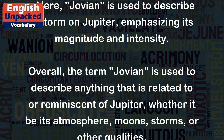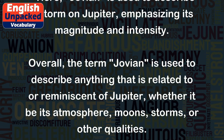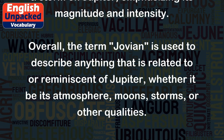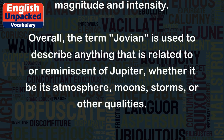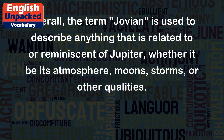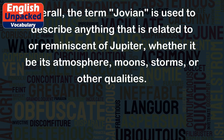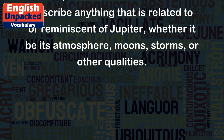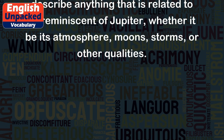Overall, the term Jovian is used to describe anything that is related to or reminiscent of Jupiter, whether it be its atmosphere, moons, storms, or other qualities.